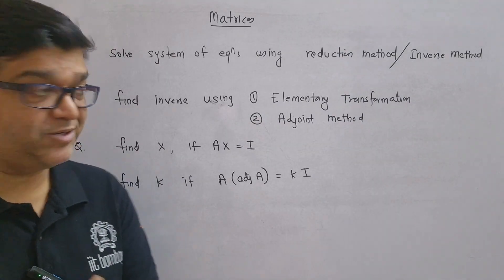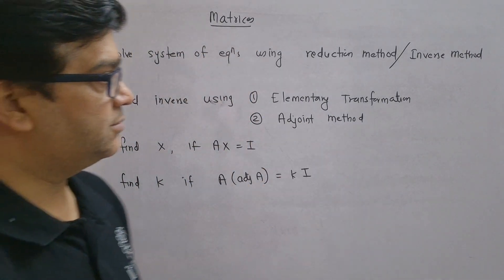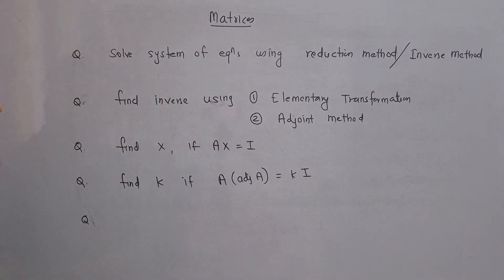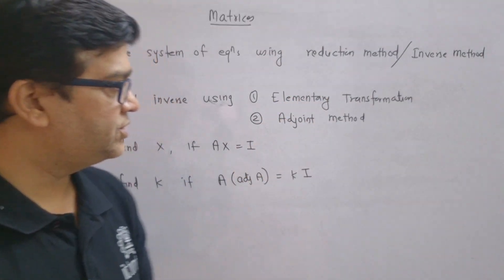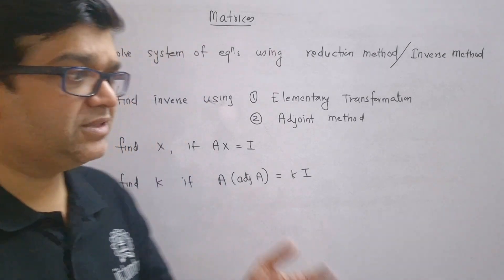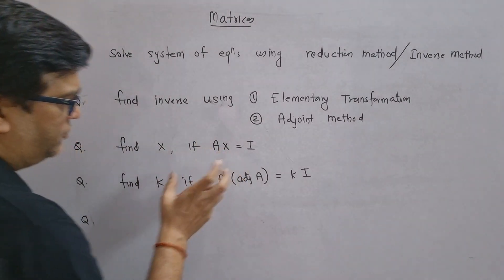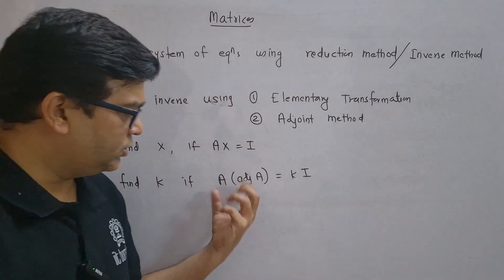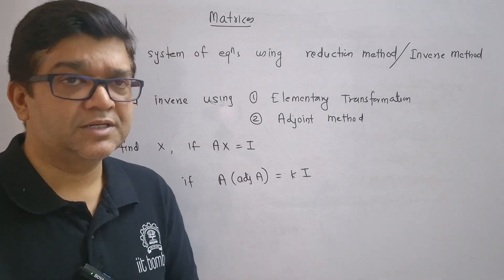Let us now focus on matrices. They will give you a system of equations and ask you to solve it either by using the reduction method or the inverse method. Another important question is finding the inverse — using elementary column transformation, row transformation, or the adjoint method. They will mention the method in the question. Also important: basic questions like find x if Ax = I, or find k if A·adj(A) = kI.